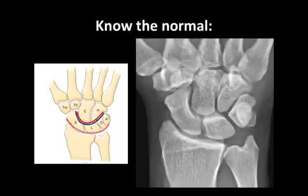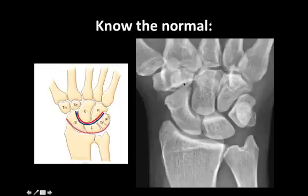Make sure the film view is appropriate and the hand is not rotated, as this can skew your diagnosis. It's also fun to go over the ridiculous names of the carpal bones. One of my favorite mnemonics in all of medicine: 'Some lovers try positions that they can't handle.' Scaphoid, lunate, triquetrum, pisiform, trapezium, trapezoid, capitate, and hamate. Again: some lovers try positions that they can't handle. But some can.